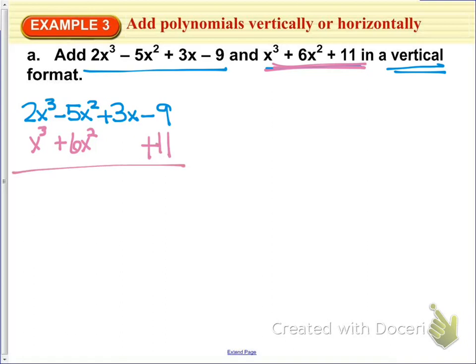Okay, now that's one way you can do it. The other way you can do this is you can just write it out horizontally, which is how it typically will be given to you. So minus 9, and then adding x to the third plus 6x squared plus 11.